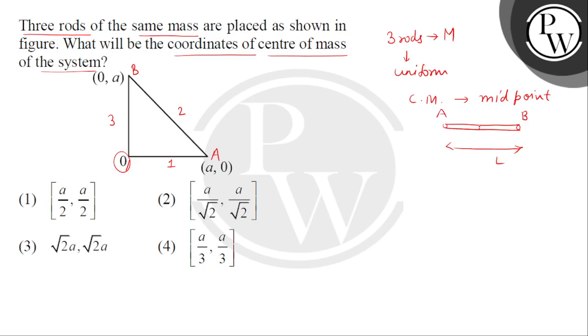So, suppose we are taking a rod whose length is L. Aur yeh rod ko maan letay hain AB. So, isme center of mass ki joh position hogi, that will be at the distance half of L from the left end A.